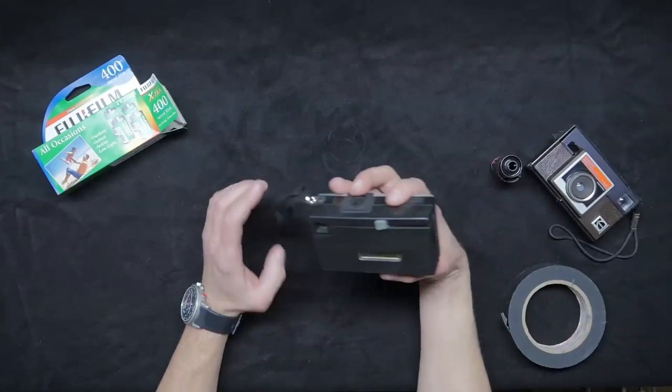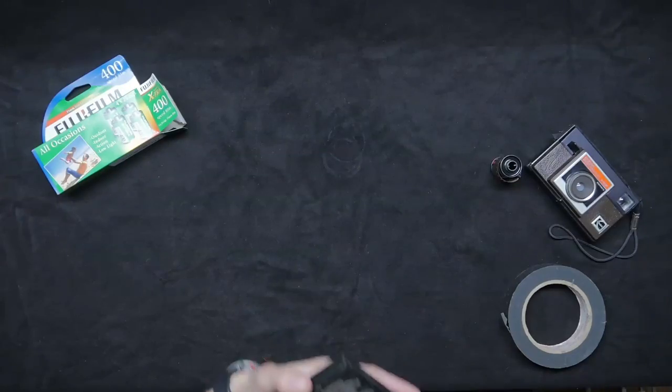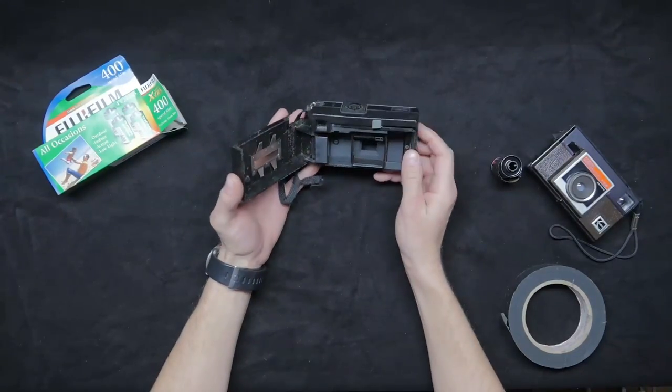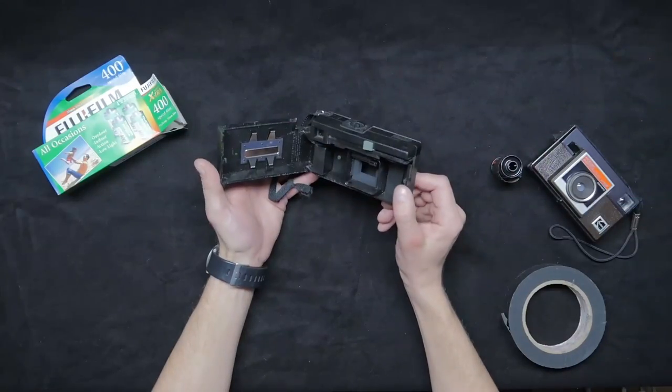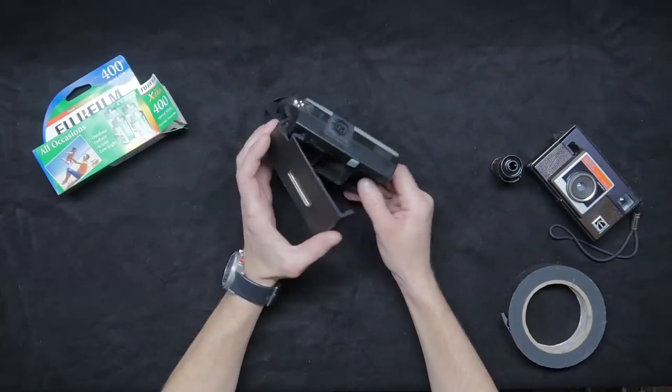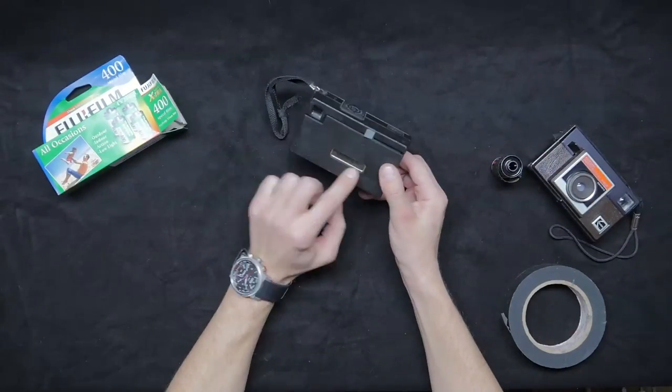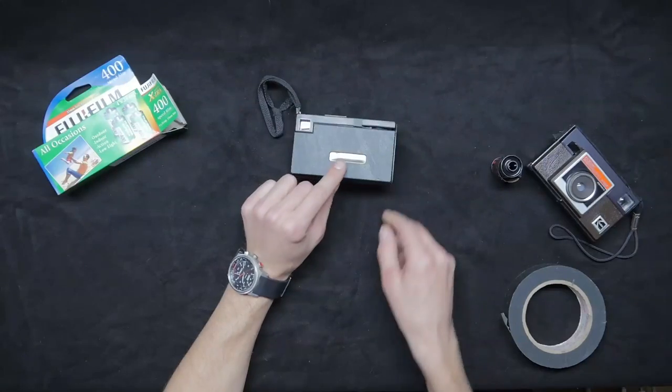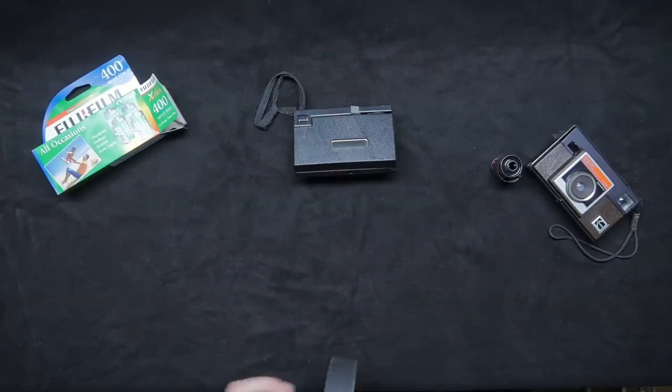They stopped making film for these many years ago. It used to take a 35mm size cartridge of film, but it came in a cartridge, kind of like 110 film, and had a paper backing with numbers on it. So as you see, there's a little window here where you used to be able to see the exposure number on the paper backing. First thing you're going to want to do is black that out, or it's going to ruin all of your photos.